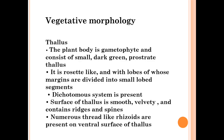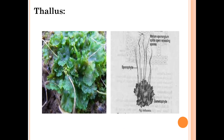Regarding vegetative morphology, Anthoceros has a thallus-like structure. The plant body is prostrate and consists of a small dark green thallus. It is rosette-like, with lobes whose margins are divided into small lobed segments. Dichotomous branching is present. The surface of the thallus is smooth and velvety, containing ridges and spines. Numerous thread-like rhizoids are present on the ventral surface of the thallus.